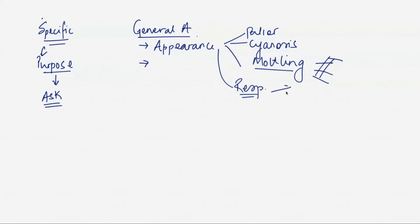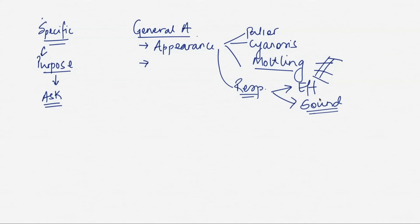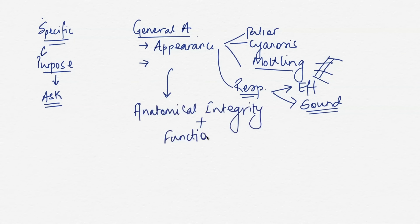Regarding the respiratory system, you check if the baby has any respiratory difficulties, is making respiratory efforts, or has any added sounds like gurgling, wheezing, or stridor. After commenting on appearance, I will start a head-to-toe examination, 'spatially checking for the anatomical integrity and functional status' of the neonate — two terms I use across all examination types to tell the examiner the examination covers both anatomical components and functional assessment.